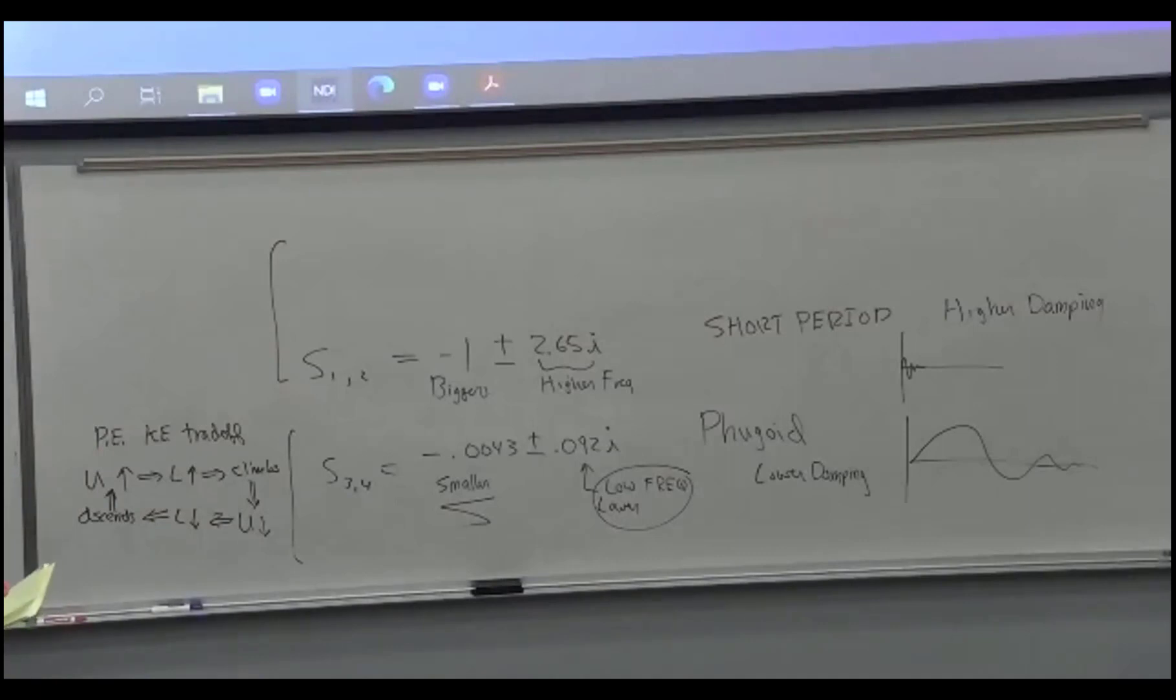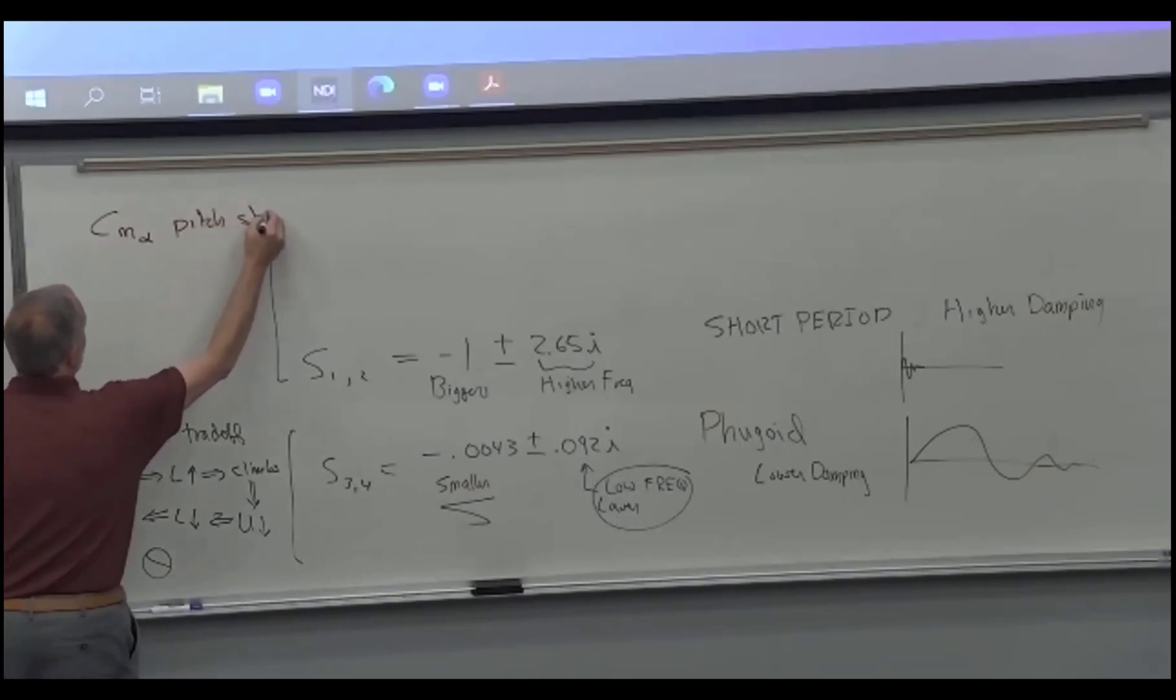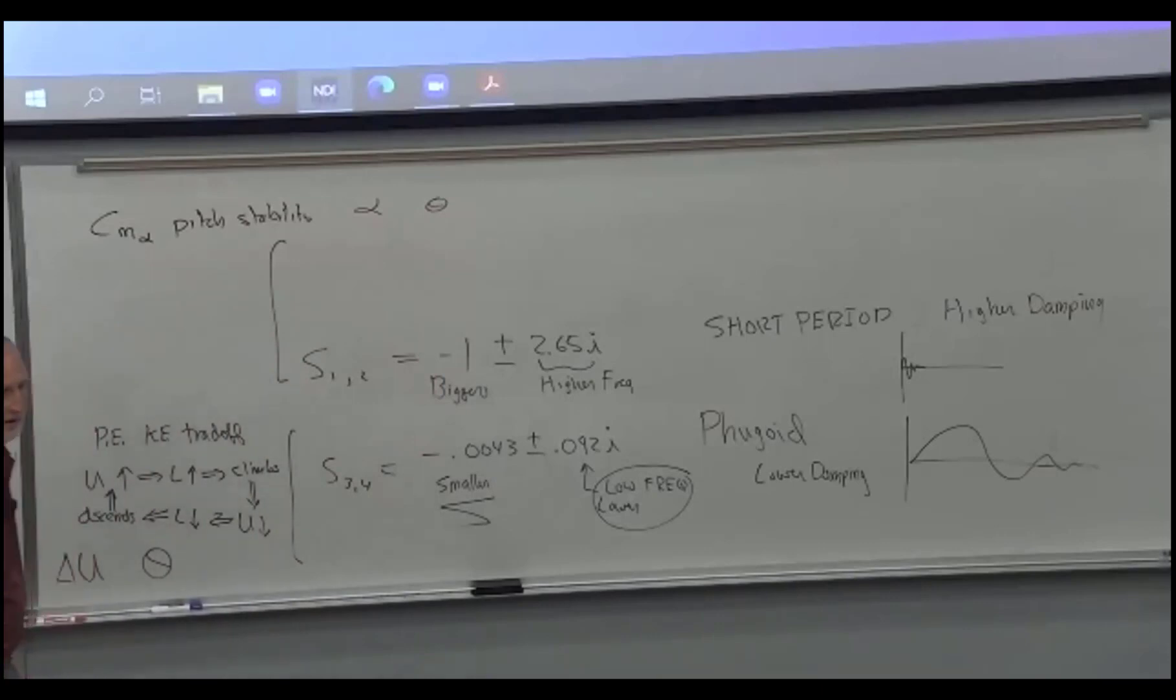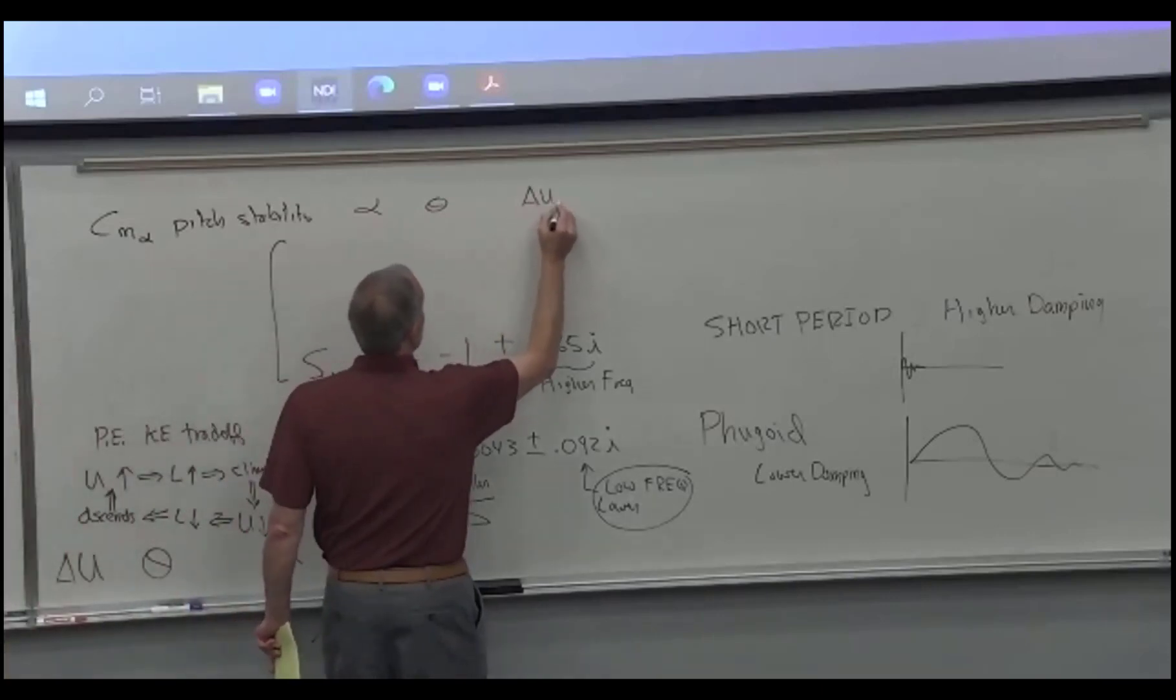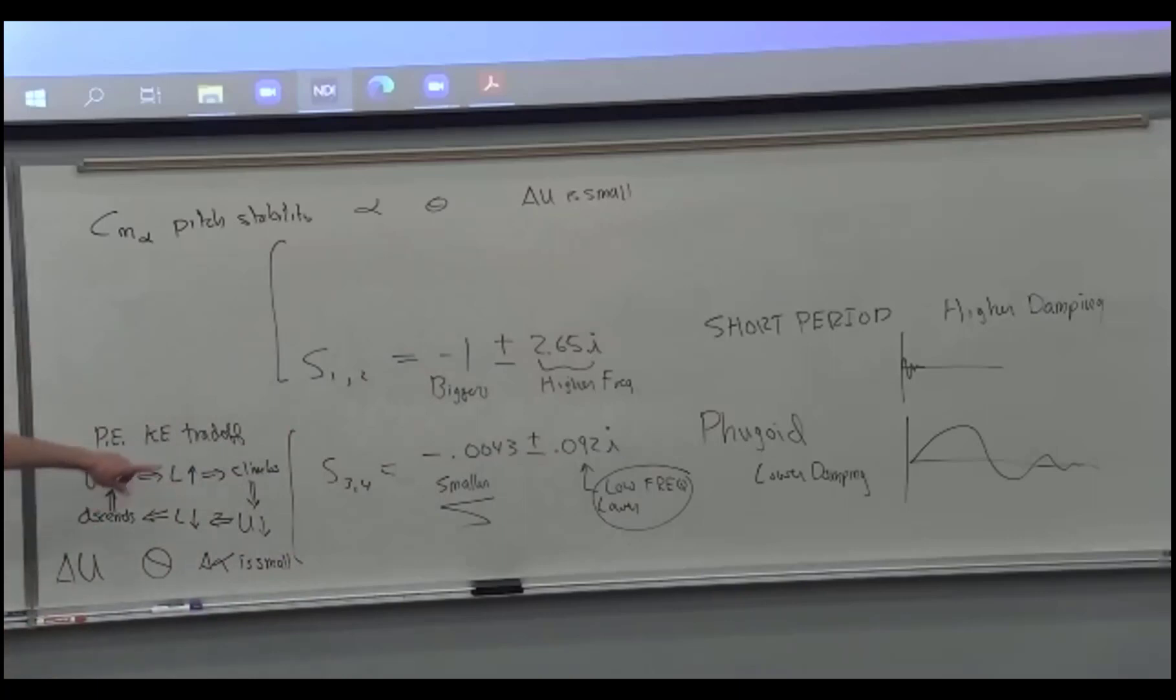So what's the short period mode? It's a high frequency. And so this is mainly tied to velocity and pitch angle. So let's write that up. The big players here are velocity and theta. Velocity changed, pitch angle changed, we climb, the velocity slows down. So this is a trade-off between velocity and angle. This thing up here is essentially a response to CM alpha pitch stability. And so it mainly involves alpha and theta. So U, the U variation is small. Whereas down here, it turns out the alpha variation is small.